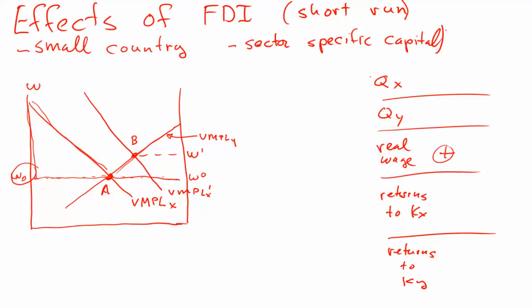Let's now think about the quantity produced in the two sectors. We had production associated with the original amount of labor in X, and it has now gone up. So we've got more capital in sector X and more labor in sector X — the quantity of X production definitely rises.